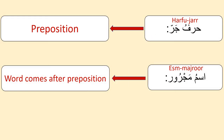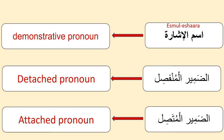Preposition — preposition in Arabic is 'harful jarr', and 'ismul majrūr' means the word that comes after the preposition. Next: 'ismul ishāra' meaning demonstrative pronoun.